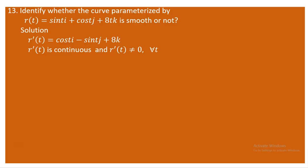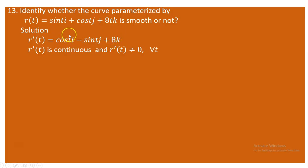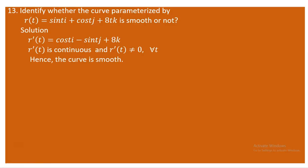This shows that the curve made by this parameterizing vector r(t) is a smooth curve. The derivative is continuous, and the derivative is never zero for any t. Notice the 8k component — as long as that is non-zero, the derivative vector can never be zero. Therefore this is a smooth curve.